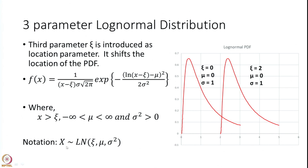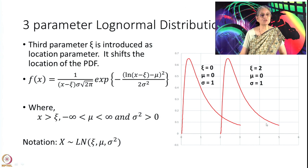It is denoted as x distributed as log normal(psi, mu, sigma squared). Looking at the PDF plots to show the effect of the location parameter psi: when psi is 0 the distribution starts from 0 and goes up and down as normal. When you make psi equal to 2, the whole graph shifts by 2 units and therefore starts from 2, following exactly the same trend. That is why it is called a location parameter — it shifts the location of the PDF.